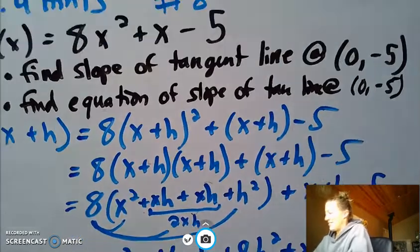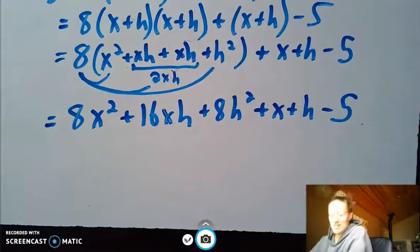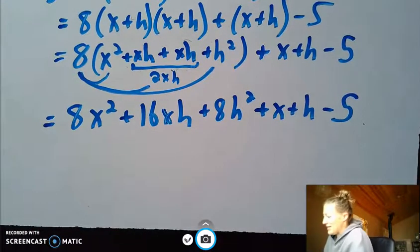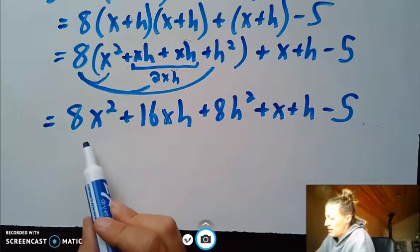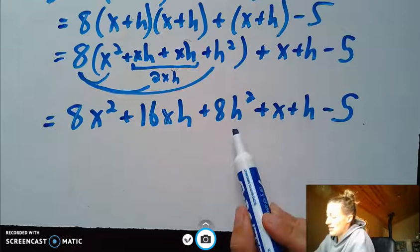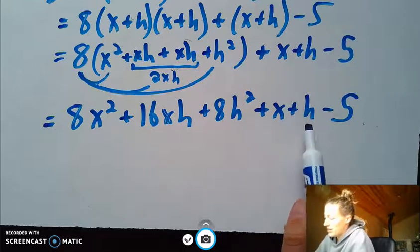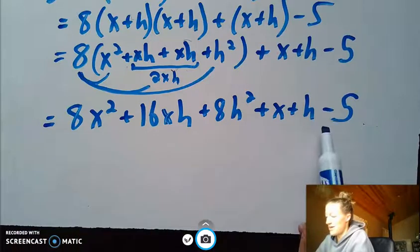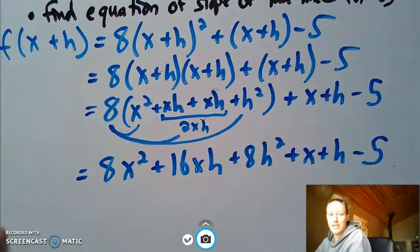And then I'm just going to copy down x plus h and minus 5 because nothing really happens to those. So let's combine these to be 2xh. And then let's go ahead and distribute this 8. So we have 8 times x² and 8 times 2xh and 8 times h². Let's combine anything that might combine. And I don't think anything really does. We have x²s, but no other x²s, xh's but no other xh's, h²s, regular x's, regular h's, and a number. So this big long thing is f of x plus h.